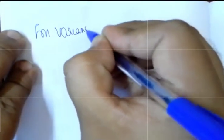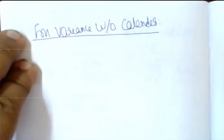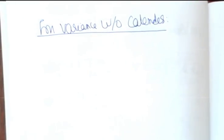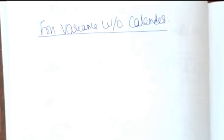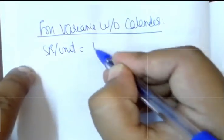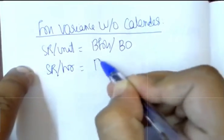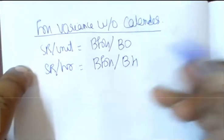Now I will move to fixed overhead. As far as fixed overhead is concerned, there will be two types of problems: one where there will be a calendar variance, and one where there is no calendar variance. I'll first start with without calendar variance. Here also you will start with SR per unit and SR per hour. Standard rate per unit equals budgeted fixed overhead divided by budgeted units; standard rate per hour equals budgeted fixed overhead divided by budgeted hours.